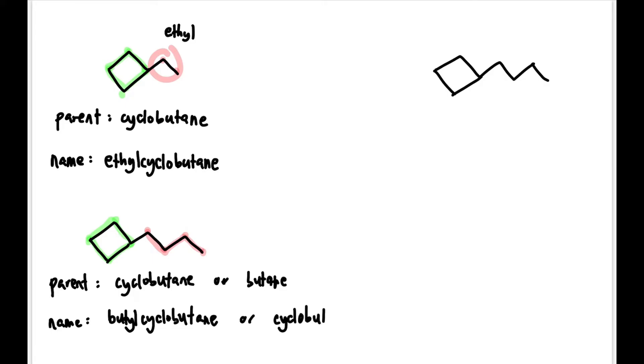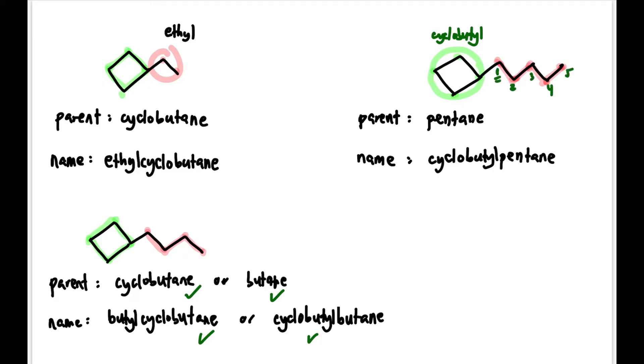Next, let's look at one with cyclobutane again, but this time there are five carbons in the straight chain. We name the one with more carbons as the parent chain, so the parent this time is not cyclobutane but pentene. The substituent is cyclobutyl because it has four carbons. So the full name is cyclobutyl pentene. It's located at carbon one, so we can write 1-cyclobutyl pentene or leave out the one.